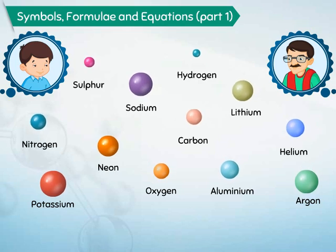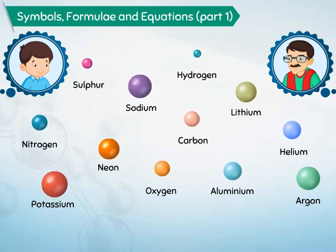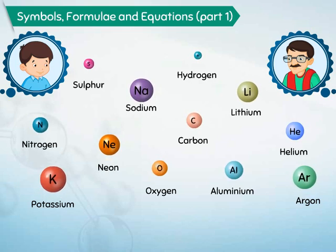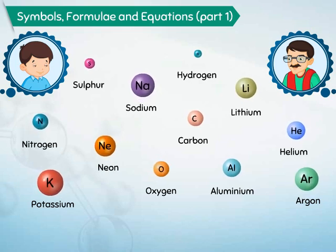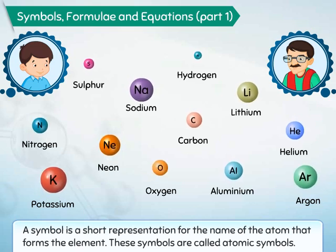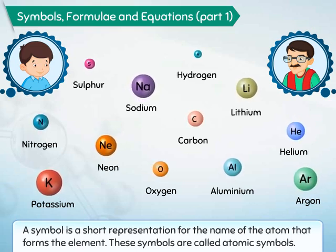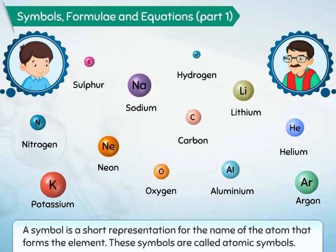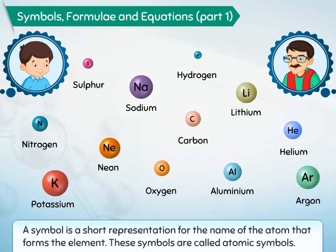To make things easier, each element is assigned a specific symbol which is derived from the name of the element. A symbol is a short representation for the name of the atom that forms the element. These symbols are called atomic symbols.